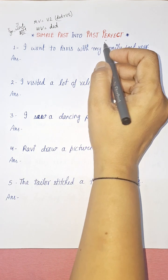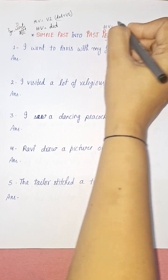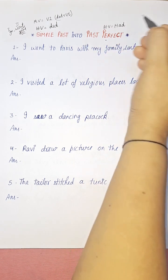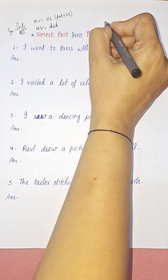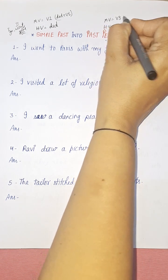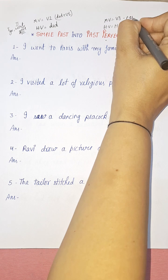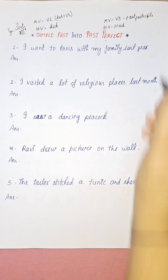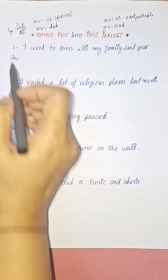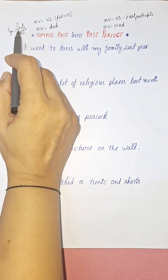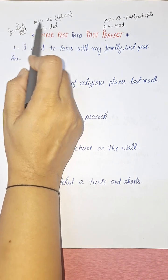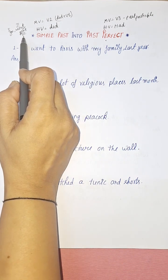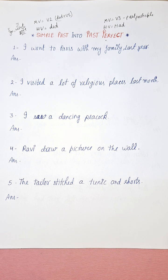Now for past perfect tense, the helping verb is 'had' — it also has only one helping verb. As a main verb, we use the third form of the verb, which is also known as the past participle form. So in simple past we use the second form, and in past perfect tense we use the third form — the past participle.